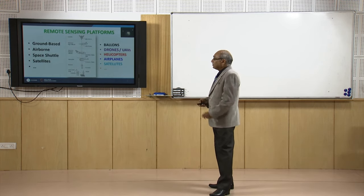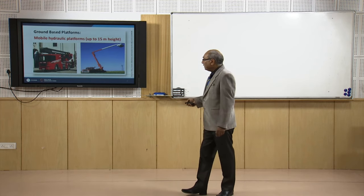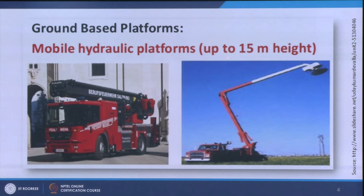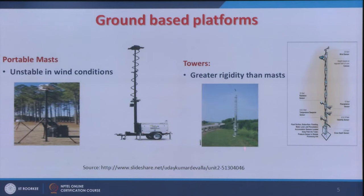Satellite-based remote sensing has several advantages and is being done regularly. Starting with ground-based platforms — nowadays people use mobile hydraulic platforms which can go up to 15 to 20 meters, and then remote sensing can be done for crop-related or disaster-related studies. Ground-based platforms can be temporary or permanent, like towers installed with greater rigidity than a mast. A mast can have sensors at different heights providing data on temperature, wind speed, wind direction, and precipitation.